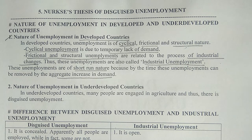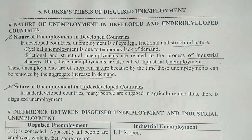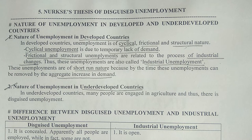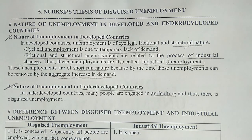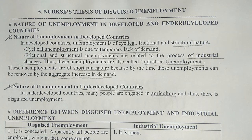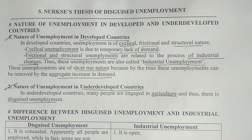In underdeveloped countries, many people are engaged in agriculture, and thus there is disguised unemployment. Disguised unemployment is prevalent in underdeveloped countries due to the large proportion of the workforce in agriculture.